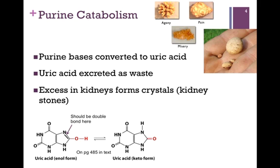The structure of uric acid is illustrated at the bottom of the slide. Please note that there is an error in your text on page 485 — there should be a double bond, as indicated by the purple arrow. This allows uric acid to maintain ketoenol tautomerism. The uric acid is simply excreted as waste, not further processed in any way.